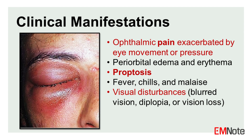Signs and symptoms: Patients with orbital cellulitis typically present with a combination of the following signs and symptoms: severe, constant eye pain that worsens with eye movement or pressure; significant swelling and redness of the eyelids and area around the eye; and bulging of the affected eye, known as proptosis.